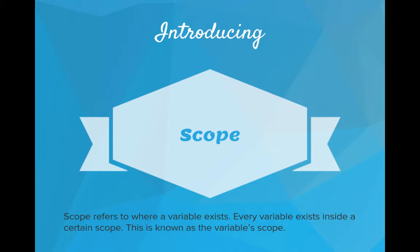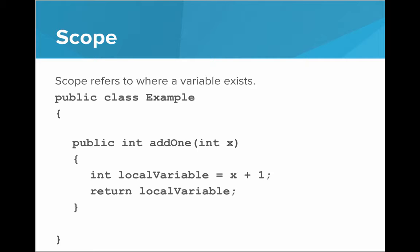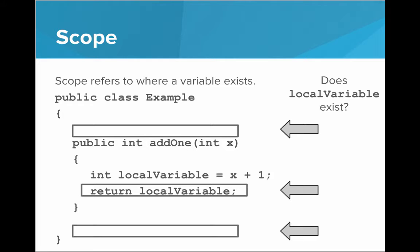What do I mean by scope? Scope refers to where a variable exists. Every variable exists inside of a certain scope, and this is known as the variable scope. So in this class, where does a local variable exist? What is the scope of a local variable? Outside of the method addOne, you couldn't write a line that involves that local variable. Local variable only exists inside the method addOne because it is a local variable of that method — that's where it was defined.